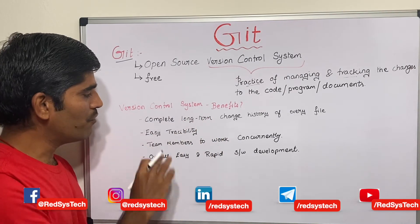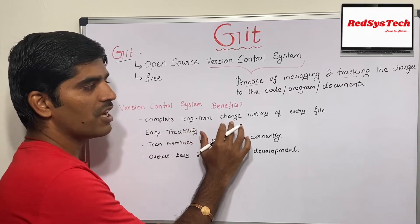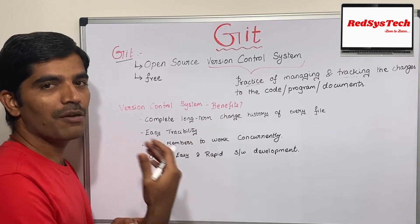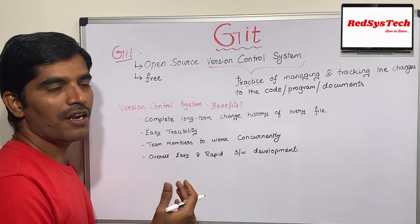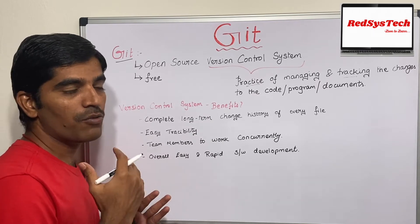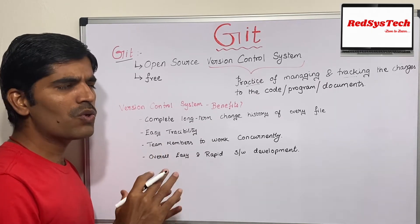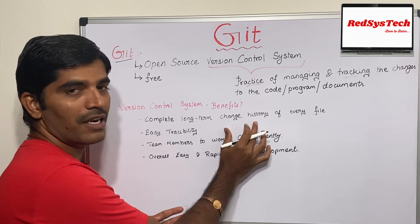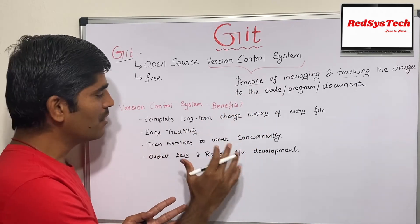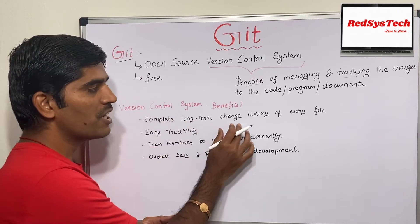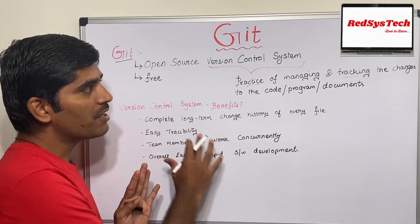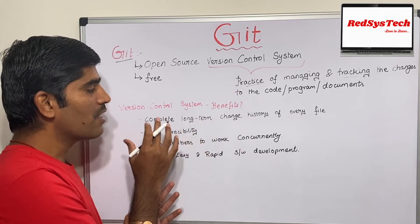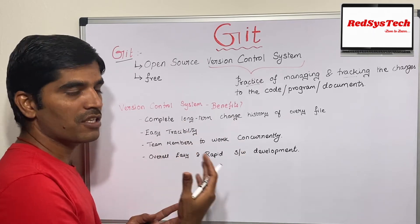If you use a version control system in your project, the first benefit is a complete long-term change history of each and every file. Let's say you make a change today, another change tomorrow, and another the day after. Later if you think a change is not working and you want to revert, all those daily changes are tracked, giving you a complete long-term change history.